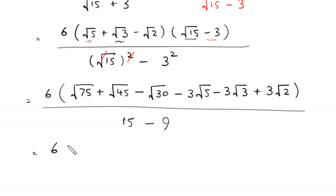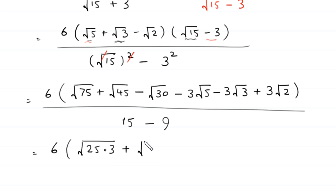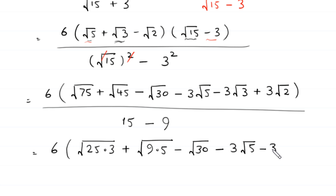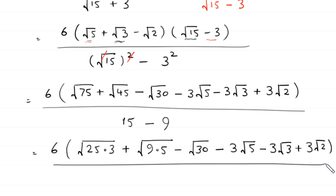Root 75 can be written as square root of 25 times 3, and root 45 can be written as square root of 9 times 5. We also have minus root 30, minus 3 root 5, minus 3 root 3, and plus 3 root 2 in the numerator. The denominator 15 minus 9 becomes 6.